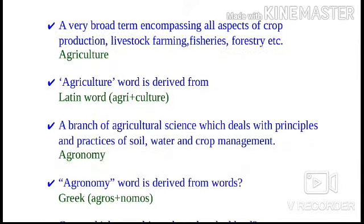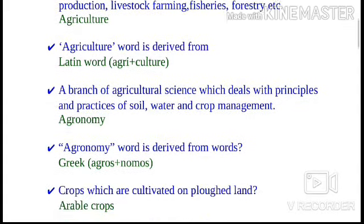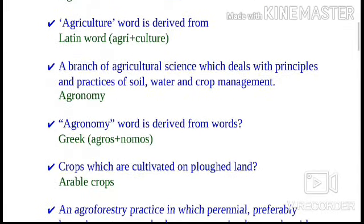The word 'agriculture' is derived from a Latin word. The next point: a branch of agricultural science which deals with principles and practices of soil, water, and crop management is known as agronomy.